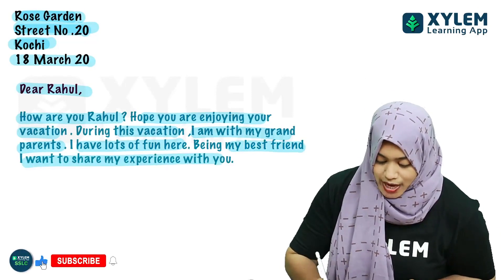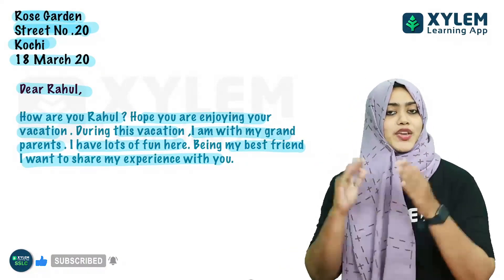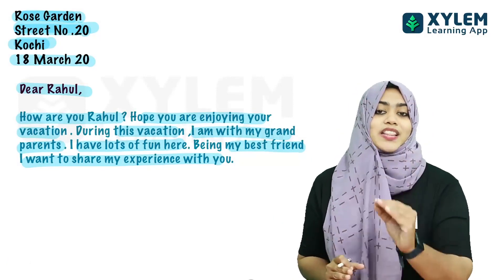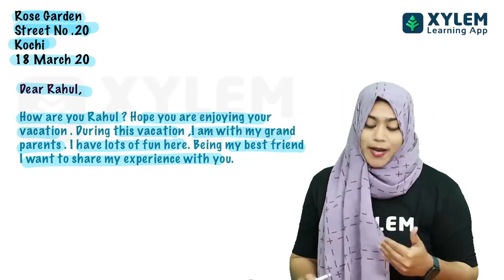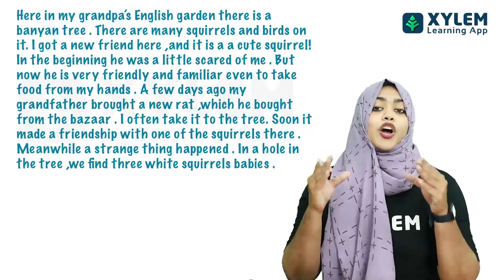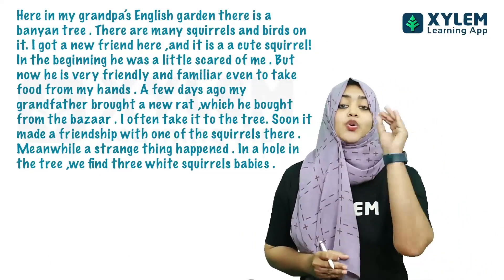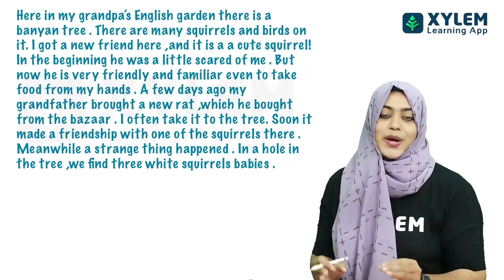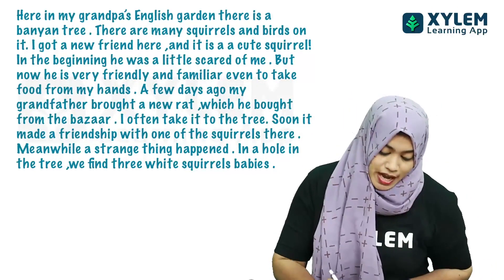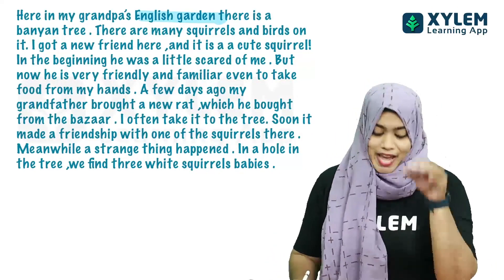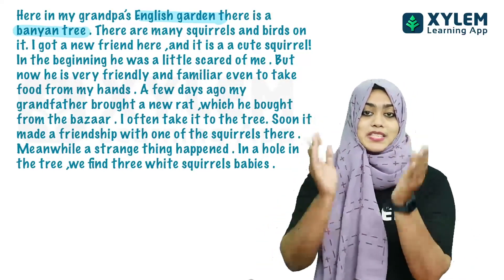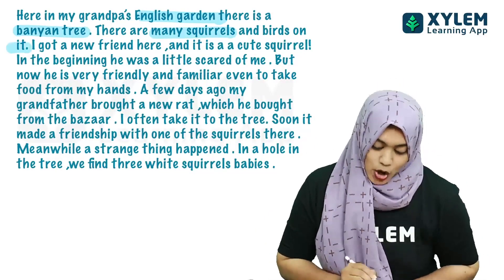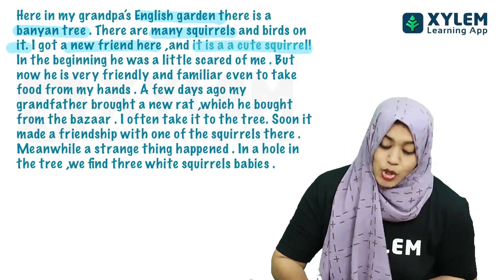Being my best friend, I want to share my experience with you. Welcome to the next paragraph — we are going to share a few things about my grandpa's English garden. English garden is our textbook topic. There is a banyan tree, and there are many squirrels and birds on it. I got a new friend here, and it is a cute squirrel.